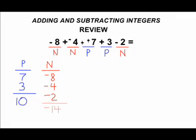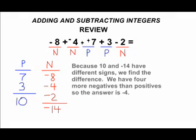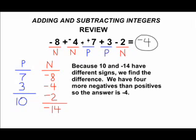Now let's take a look at our different signs. We're going to find the difference of 10 and negative 14. We see that there are more negatives than positives, and there are precisely 4 more negatives than positives. Therefore, our answer is negative 4.